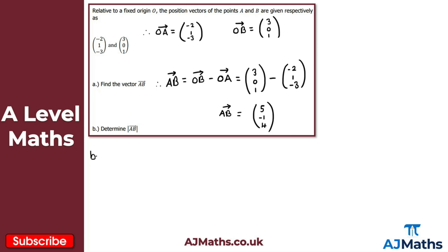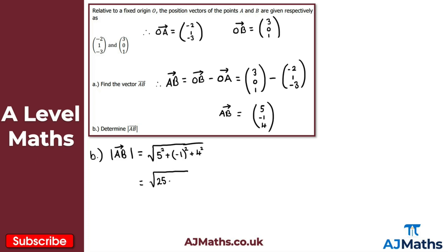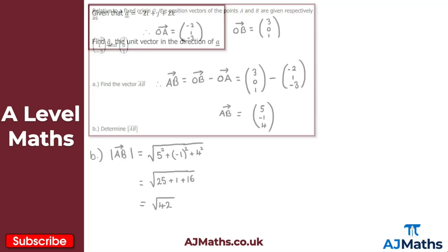For part b, we find the magnitude of vector AB using Pythagoras: the square root of 5² + (-1)² + 4², which equals the square root of 25 + 1 + 16. That gives us the square root of 42. That's our solution to question 2.